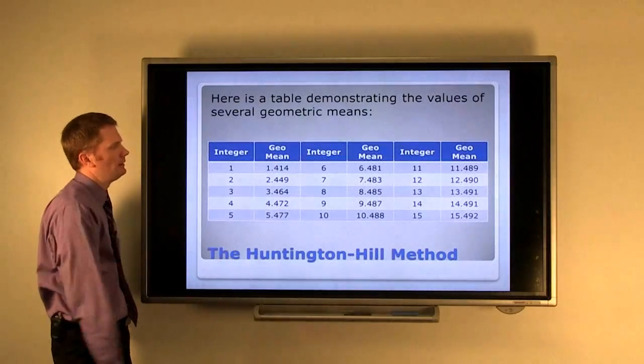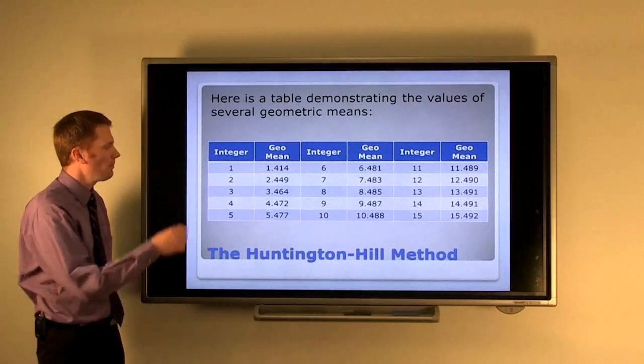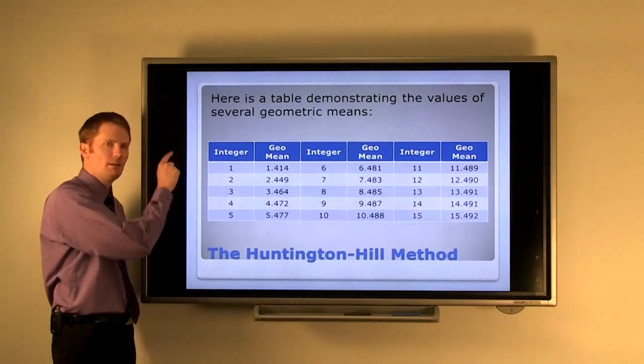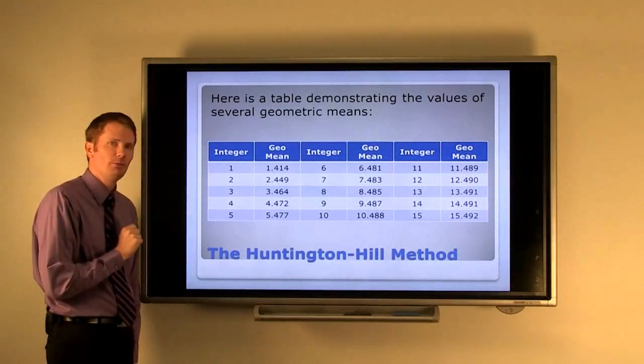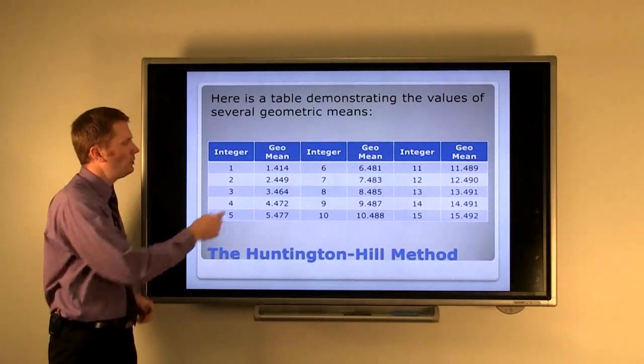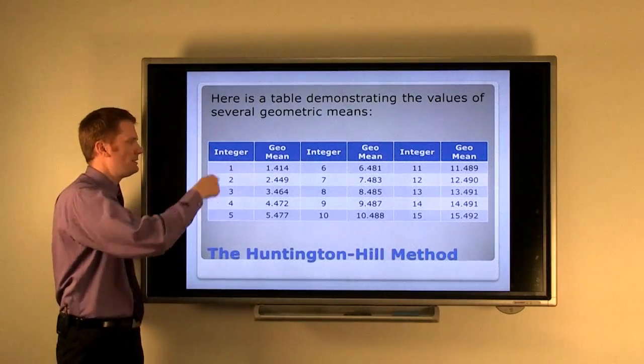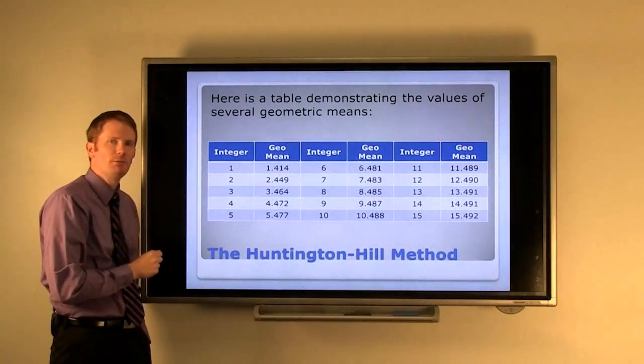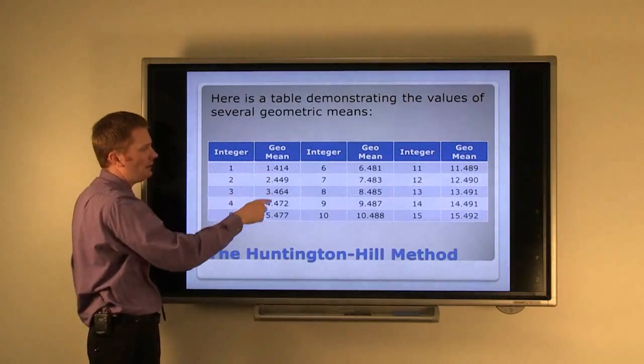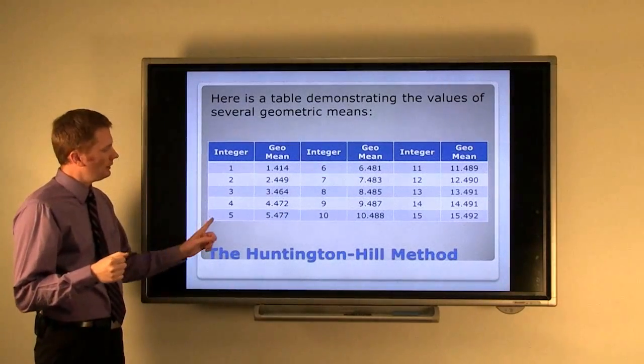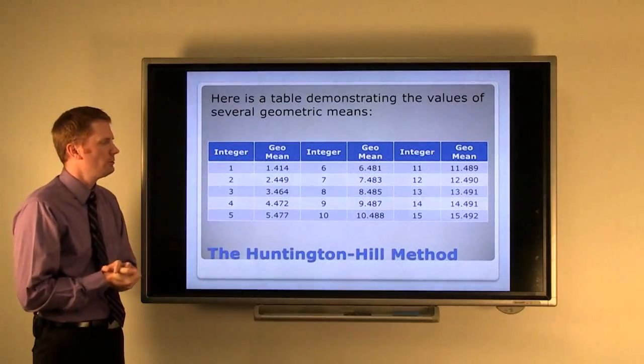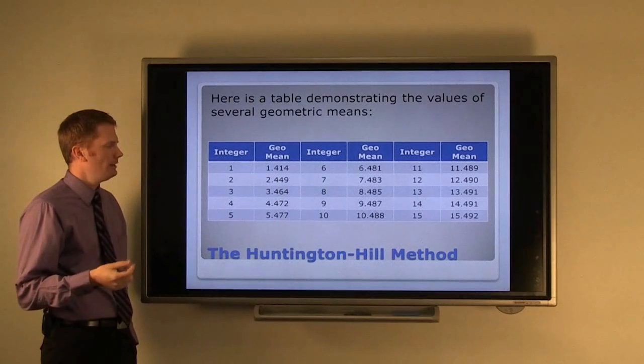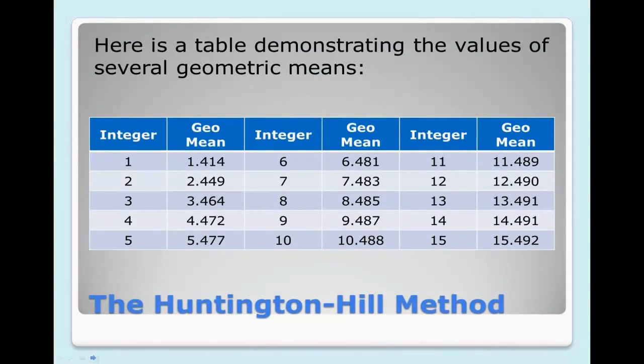So it helps to have a table of these geometric means. If you had a number between one and two, the geometric mean is 1.414. So if a state had a quota of 1.40, they would stay at one because it's less than 1.414. But if they had a quota of 1.52, that's bigger than 1.414, so it would go up to two. What you notice is that the decimal portion of this geometric mean gets steadily larger as the size of the lower quota integer gets larger. This actually ends up helping smaller states slightly more than larger states, because these smaller states only have to have a decimal larger than .41 to get rounded up. But by the time you deserve 14, you've got to have a decimal larger than .49 to go up to the next level.